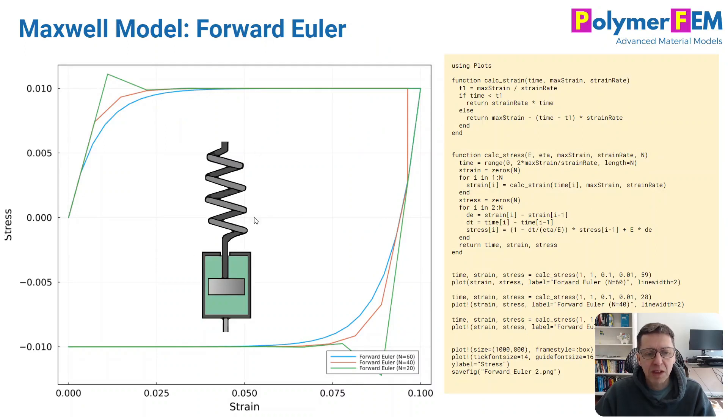Here is a spring dashpot single Prony series term with the parameters that are listed in the Julia code to the right. The modulus is one, the viscosity is one. And I pull on it and then unload it. And we can see that the different curves here are all the same except the number of time increments that I took in the calculation. If I don't have enough time increments, the time increments become very large, and a forward Euler solution can become unstable. And that's well known.